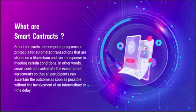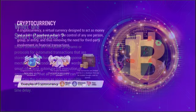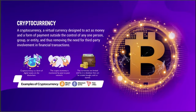Some basic terms: smart contracts are computer programs or protocols for automated transactions stored on a blockchain, running in response to meeting certain conditions. Cryptocurrency is a virtual currency designed to act as money and a form of payment outside the control of any person, group, or entity, removing the need for third-party involvement. Examples include Bitcoin (BTC), Ethereum (ETH), and Tron (TRX).